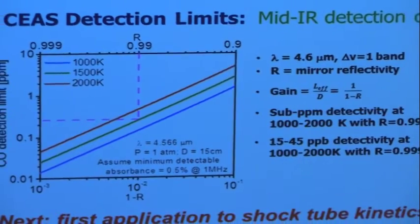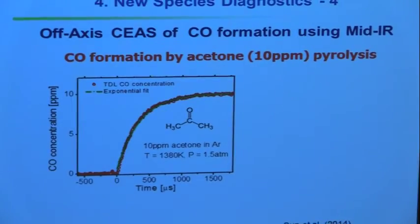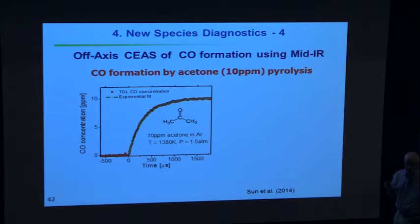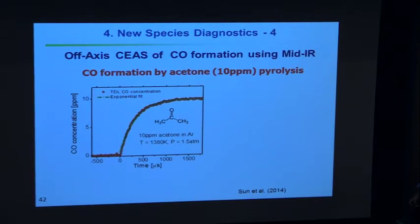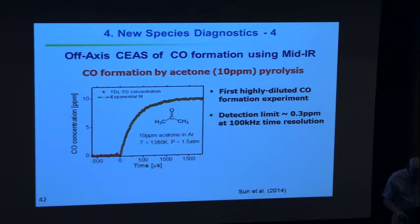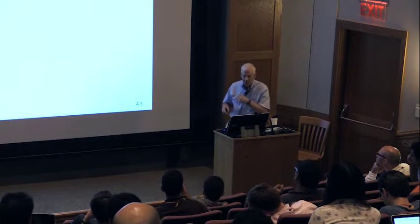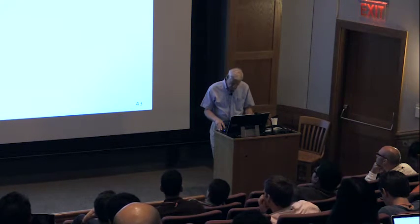We can now measure CO versus time with the lowest amounts of reactants — the cleanest experiments because of contamination concerns. Here's an experiment using acetone where we watch CO formation, and the final value is only 10 parts per million. That's an impressive result — first highly diluted CO formation measurement. We're doing this for CO in the infrared and could do it in the UV as well. The trick right now is achieving high temporal resolution given the elliptical pattern — but we have an idea for that. This is exactly where we are right now in using laser absorption in shock tube experiments.